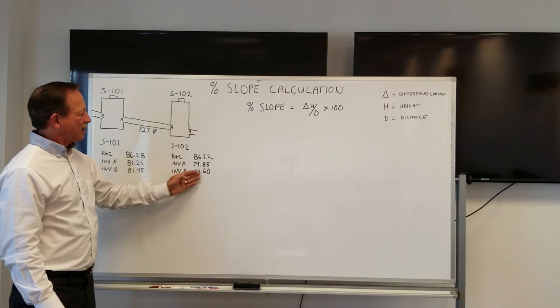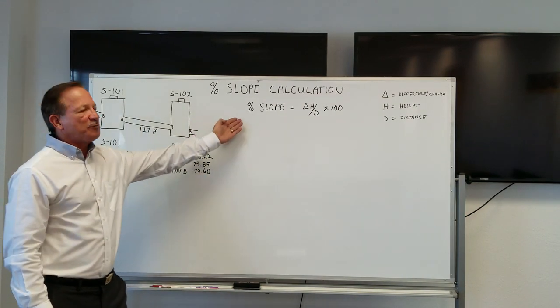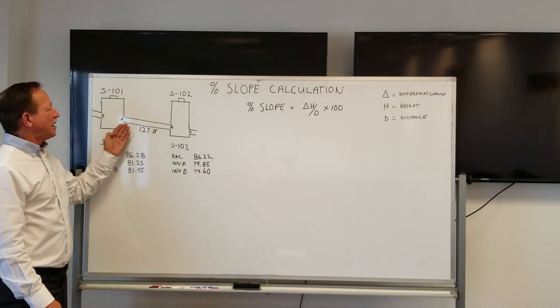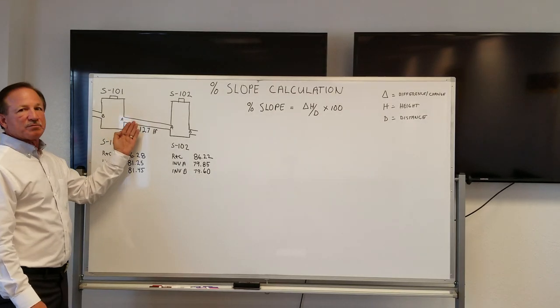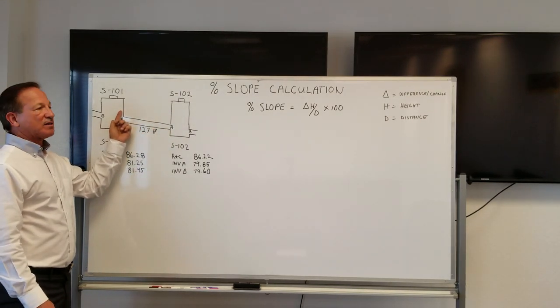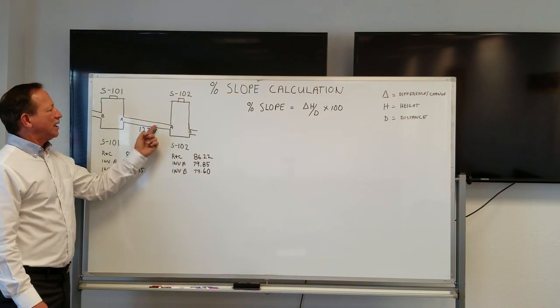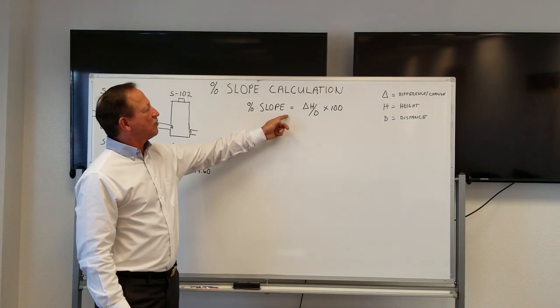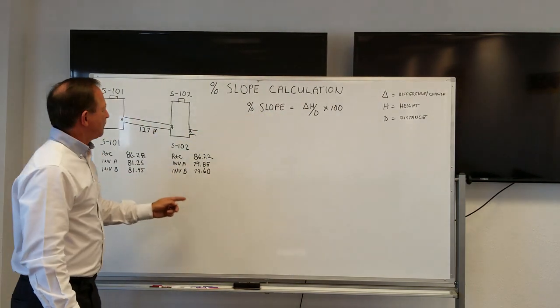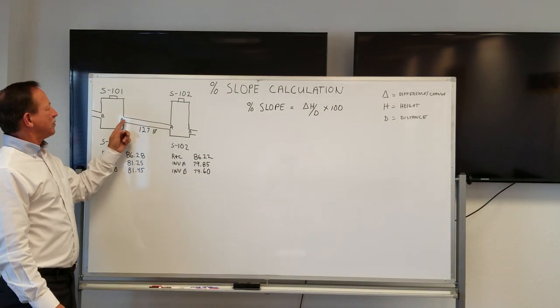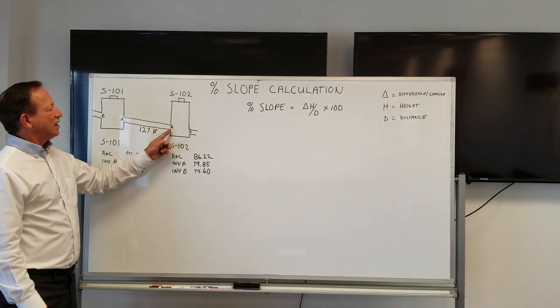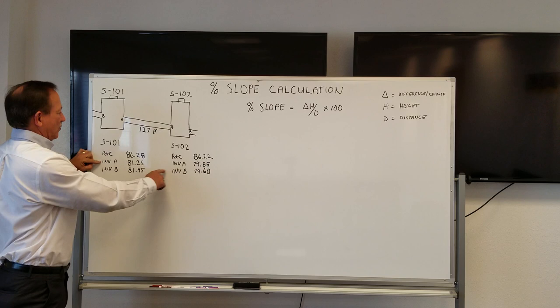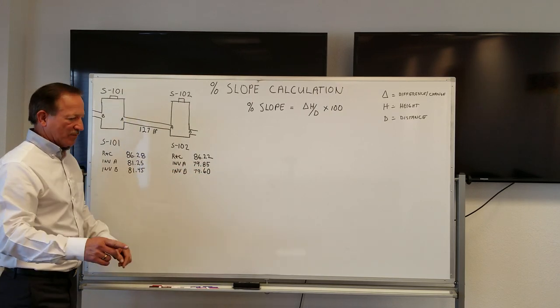So what information do we need to do this? We need the information that talks about the pipe that's flowing between the two structures. We're going to do this piece of pipe right here. You can see it goes from structure S-101 to 102, and there's a drop in the pipe run. The first part of the equation says the percent slope equals the change in height. So what are we looking for? We're looking at the height difference between where the pipe leaves structure 101 and comes into structure 102, and we know that that's given here as these two inverts: 81.25 and 79.85.